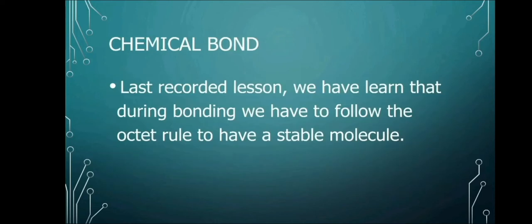So now, let's go back with the meaning of chemical bond. Last recorded lesson, we have learned that during bonding, we have to follow the octet rule to have a stable molecule. The octet rule is the ability of an atom to carry 8 valence electrons in order for it to be called stable.